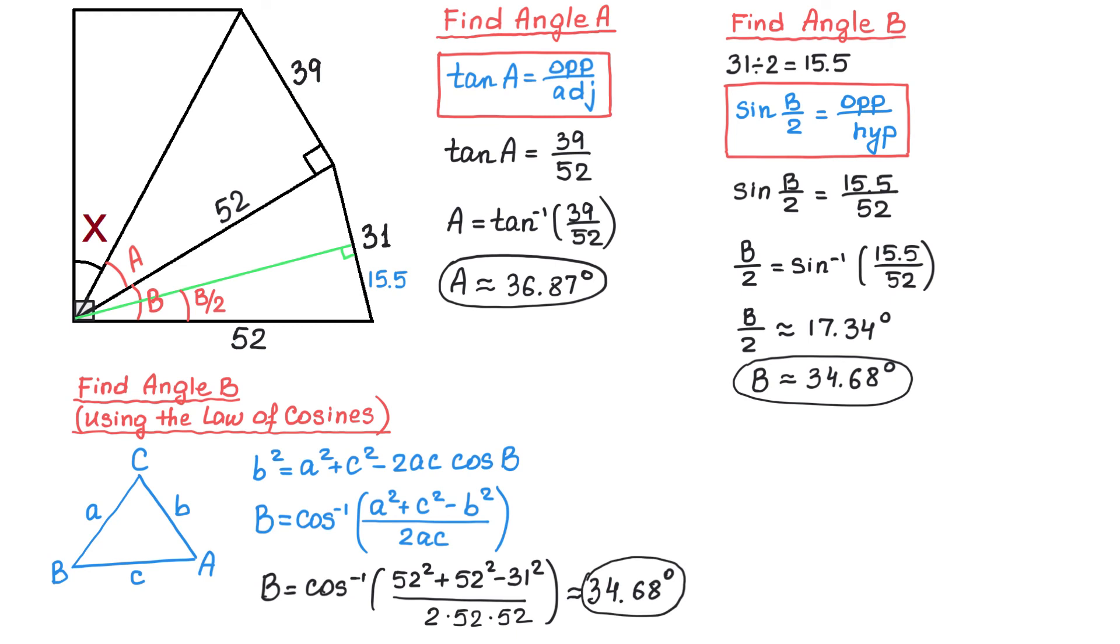As you see, with both methods we got the same angle. Now to find angle X we will subtract angles A and B from 90 degrees. So angle X equals 90 degrees minus 36.87 degrees minus 34.68 degrees. Then angle X equals 18.45 degrees.